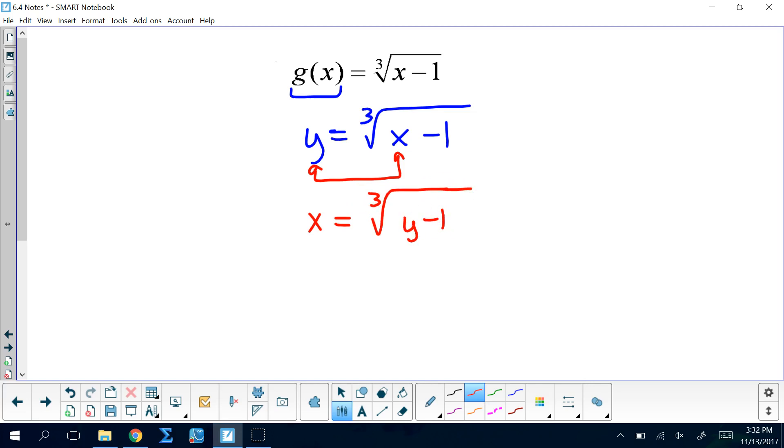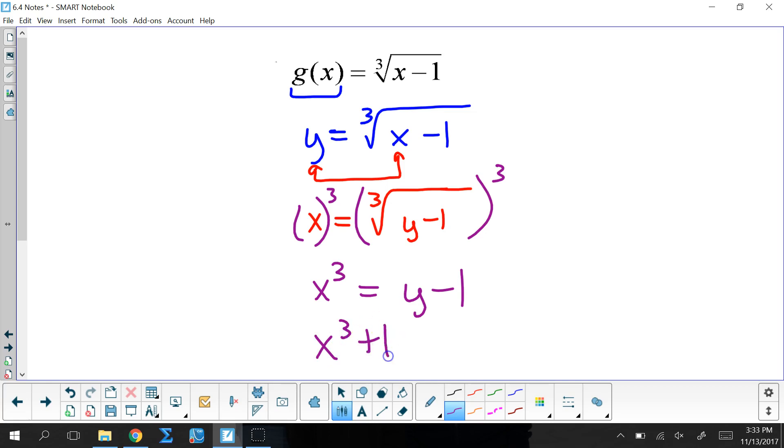And now, I've got to solve for y. In this particular case, y is stuck inside of a radical. So, I'm going to cube both sides. So, that gives me x cubed equals y minus 1. Add 1 to both sides. x cubed plus 1 is y.